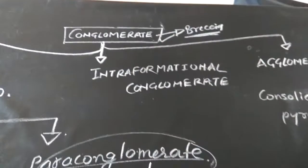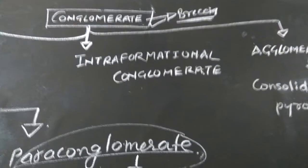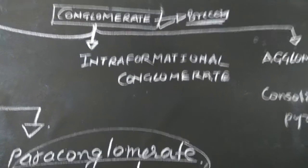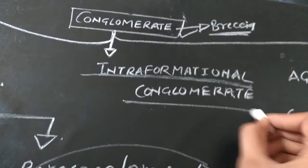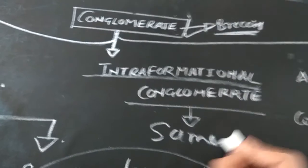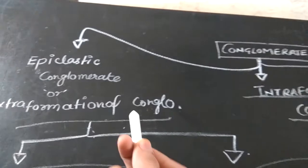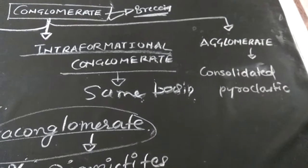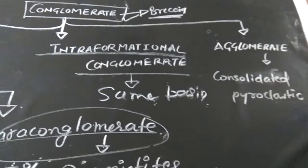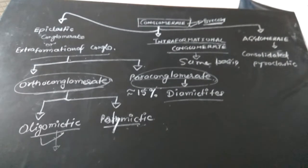The second major type is intraformational conglomerate, which is indicative of minor oscillations in a basin, or local folding and faulting. All clasts are derived from within the same basin. In agglomerate conglomerate, the clasts are material ejected from a volcano. This covers the entire classification of conglomerate.